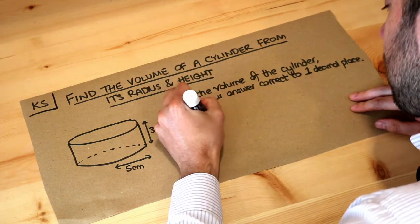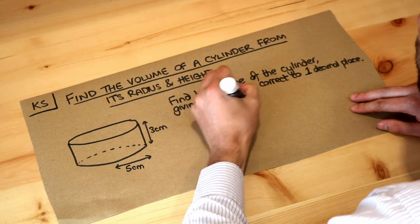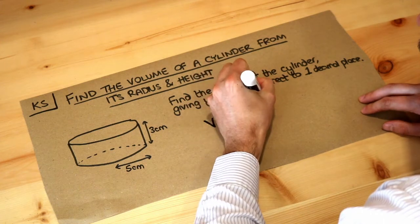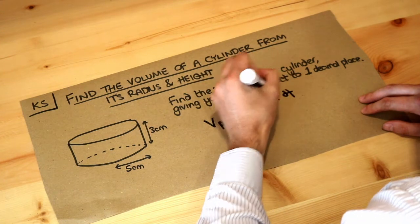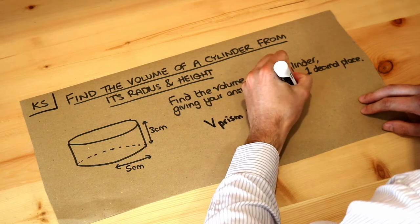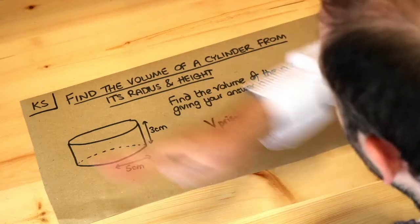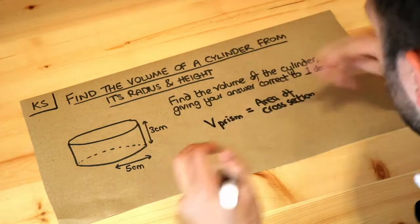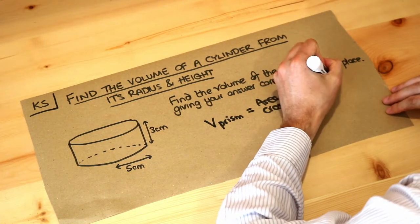Now let's remind ourselves of the volume of a prism. The volume of a prism is the area of the cross section, so what shape you see, what 2D shape, whenever you slice that particular 3D solid. So we'd see a circle, and then we multiply it by the length of it.